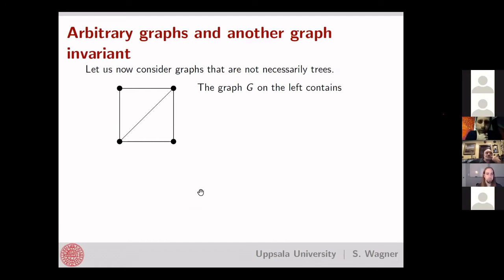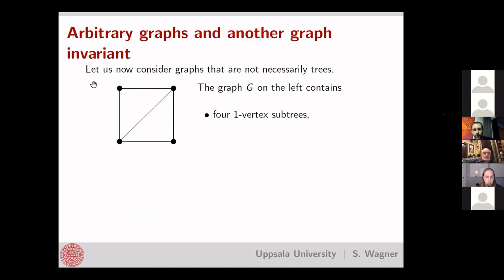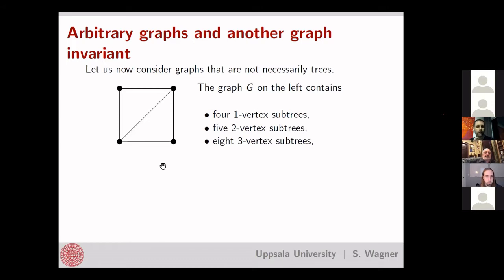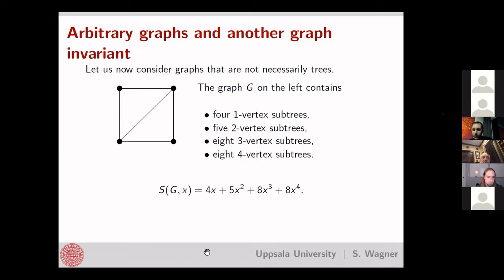Now we move further and look at arbitrary graphs. For a graph G that is no longer a tree, we can still define subtrees and a subtree polynomial — all definitions make sense. For example, a given graph G with four vertices has four one-vertex subtrees, five two-vertex subtrees (one per edge), eight three-vertex subtrees, and eight four-vertex subtrees — exactly the spanning trees of the graph. So its subtree polynomial is 4x + 5x² + 8x³ + 8x⁴.